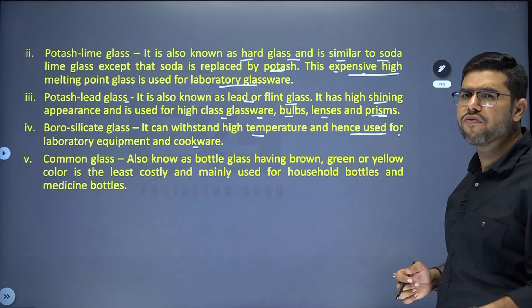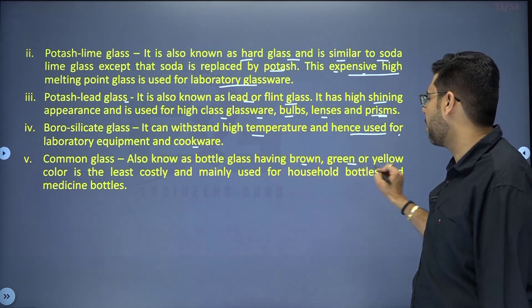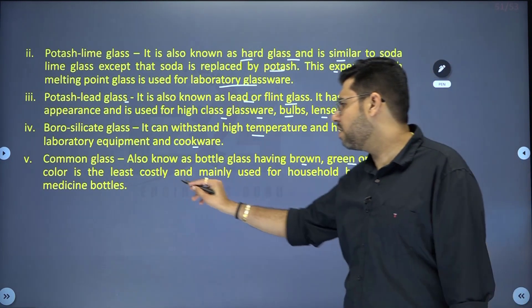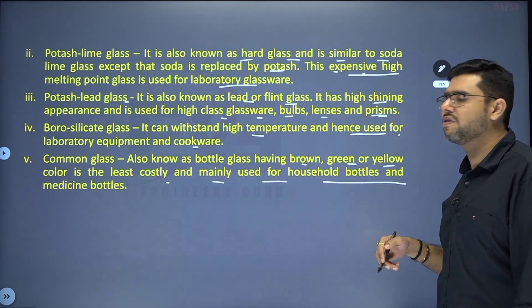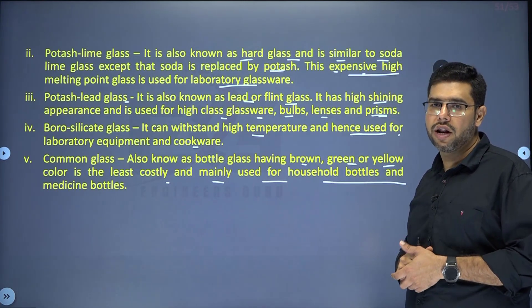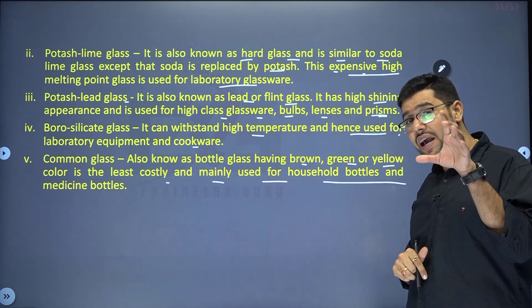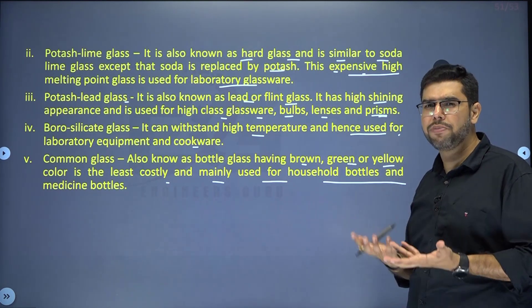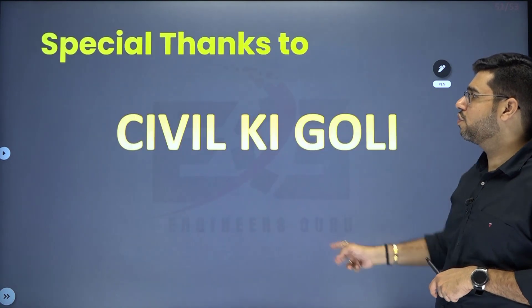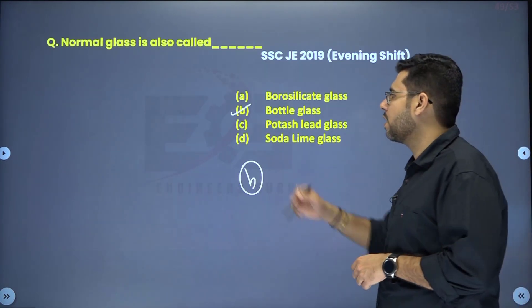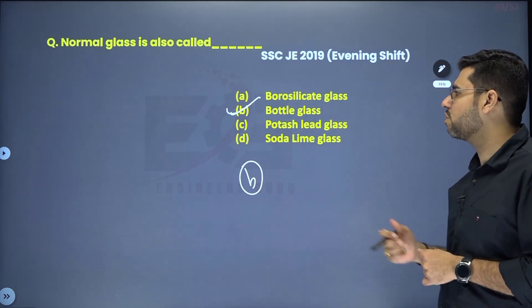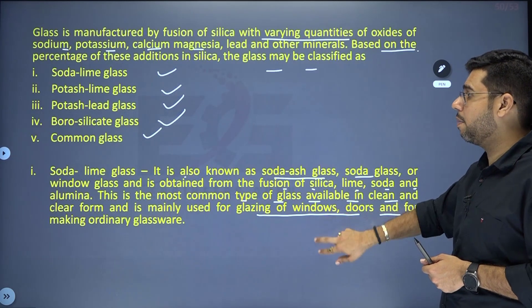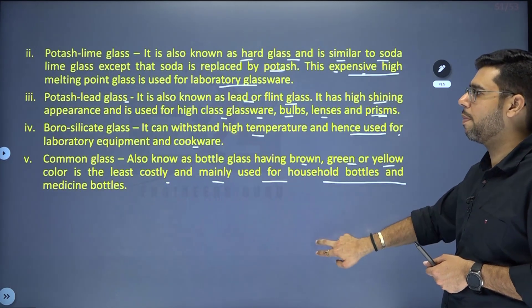Common glass is the cheapest form of glass, available in various colors like brown, green, yellow, etc. Generally used for making bottles — household bottles and medicine bottles — hence also called bottle glass. It is least costly. So normal glass and common glass are both called bottle glass. Now all types of glasses have been covered well — no difficulty should remain in glass questions.